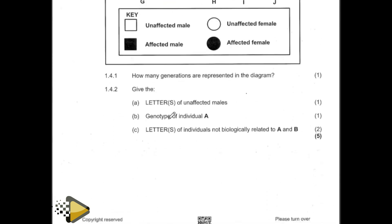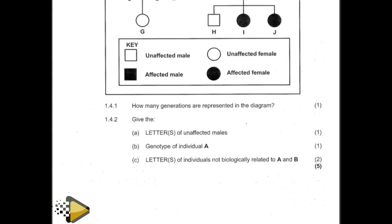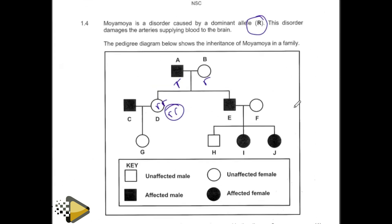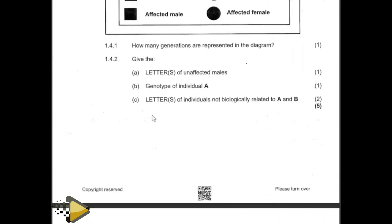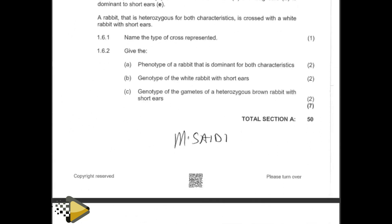They're saying the letter or letters of individuals not biologically related to A and B. I told you that when you see this, it means they just got married. This one gave rise to this one, this one gave rise to this one, and these were just coming in to marry. Therefore the answer must be C and F. So you answer here — the letters must be C and F. That is the answer.